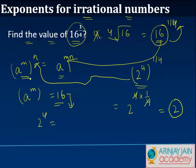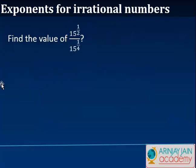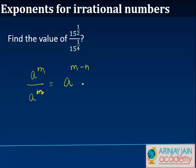So, what we did was we used the law of exponents to find out the value for an irrational number. Let's look at some more examples. You have 15 to the power 1 by 2 divided by 15 to the power 1 by 4. You know that a to the power m divided by a to the power n is basically equal to a to the power m minus n.